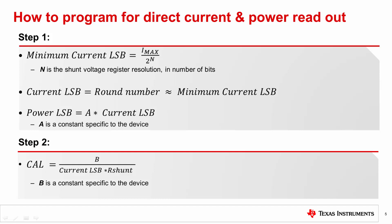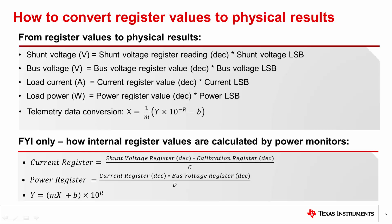Please refer to the datasheet for a particular digital power monitor to find out what the constants N, A, and B are for that device. For example, in the INA233, N is equal to 15, A is equal to 25, and B is equal to 0.00512. Once the calibration register is successfully written, the current and power registers can be read after conversion.